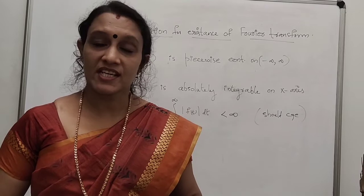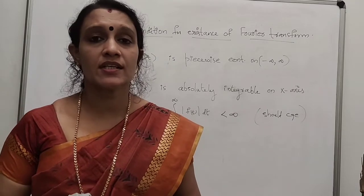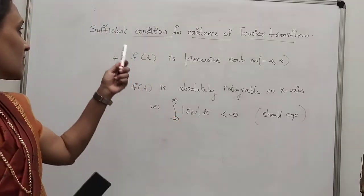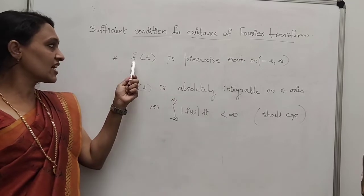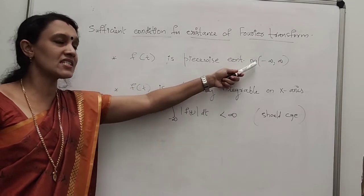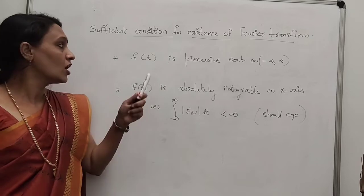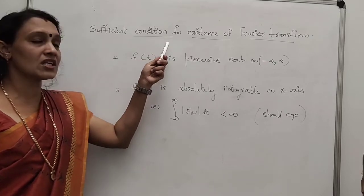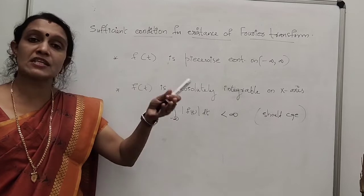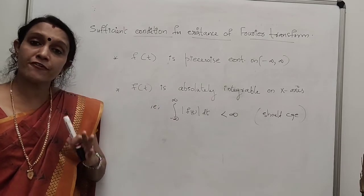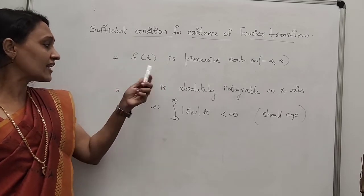An important topic: what are the sufficient conditions for the existence of the Fourier transform? There are two conditions. First, f(t) is piecewise continuous on the entire interval from minus infinity to infinity — it may have some discontinuous points.